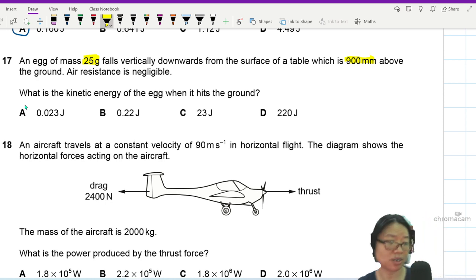Poor egg. Humpty Dumpty sat on a table. Humpty Dumpty had a bad fall. What is the kinetic energy of Humpty Dumpty? What is the kinetic energy of the egg when it hits the ground?